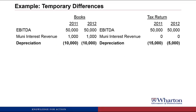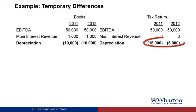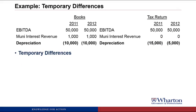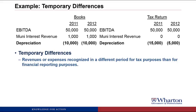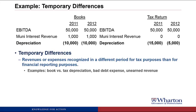Next, let's look at how temporary differences work. A classic example is depreciation. Let's say we have an asset for two years. On the financial statements, we depreciate it straight line — $10,000 expense per year. On the tax return, we do accelerated depreciation: $15,000 expense in the first year and $5,000 in the second year. The total is still $20,000 over two years for both methods. This is a temporary difference — a revenue or expense recognized in a different period for tax purposes than for financial reporting. Other examples include bad debt expense and unearned revenue.